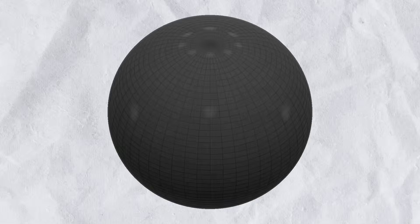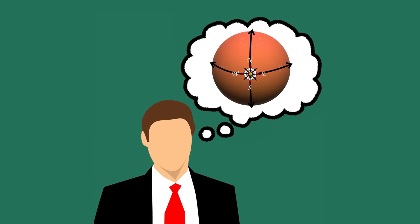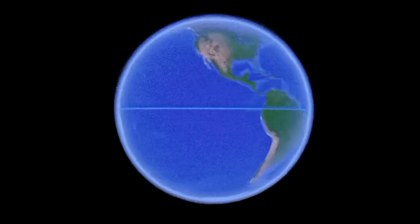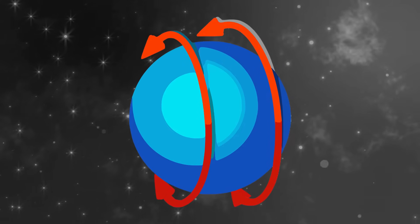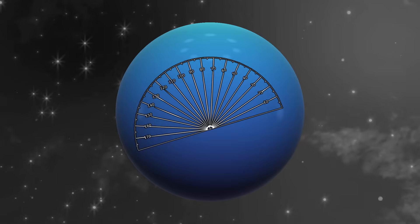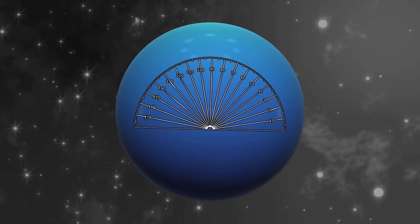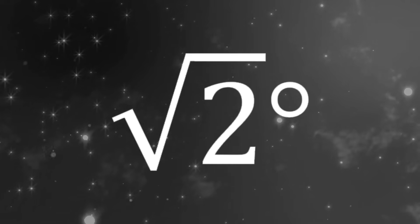To start off we need a sphere, and we need to think about two specific rotations. The first spins the sphere around a vertical axis to east or west, and the second rotation moves it south or north. We need the angle of these rotations to be irrational, something like the square root of 2 degrees, so the sphere doesn't return to the same point after any number of rotations.